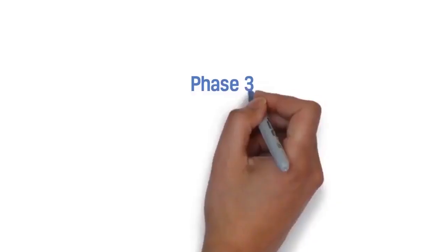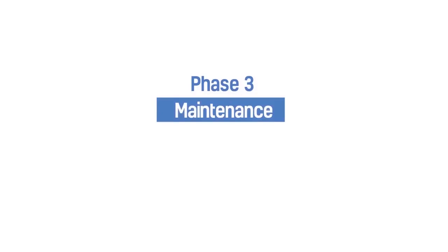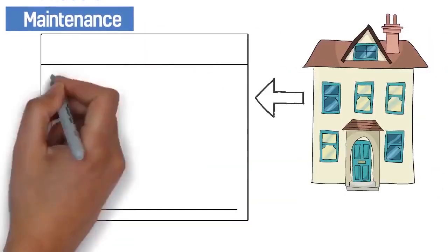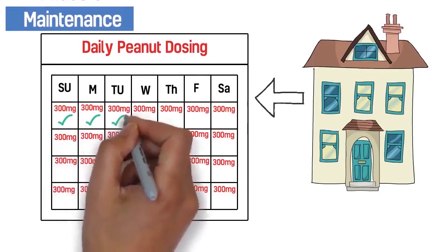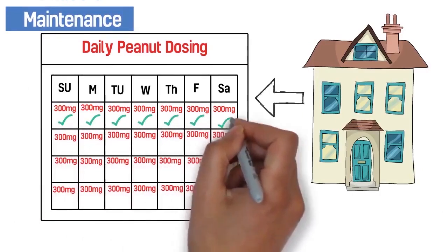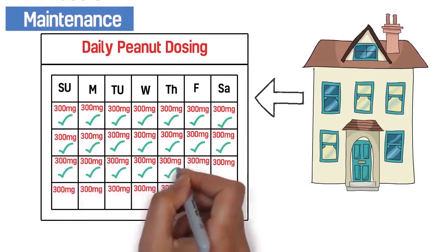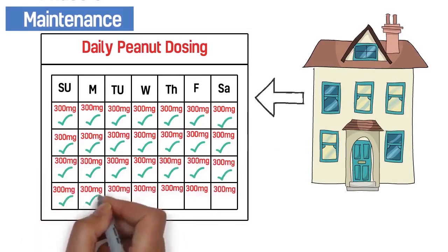Phase 3. Maintenance. In this last phase, your child will take the 300mg dose every day at home. Taking your dose every day will keep your child desensitized and less likely to react if accidentally exposed to peanut. Once you've reached this phase, your dose will never get any higher.